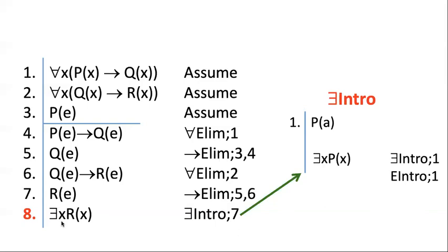Sometimes you have to think when I do universal elim, which name do I want? And when I do existential intro, which variable do I want? Generally paying attention to other parts of the proof is going to help answer those questions for you.